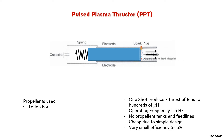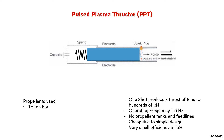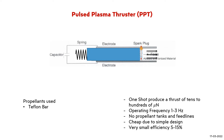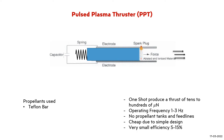A simple spring advances the bar axially for propellant resupply, as shown in the animation. One shot produces a thrust of 10 to 100 micronewtons. The thruster usually operates at a frequency of 1 to 3 Hz. A PPT thruster has several advantages like zero warm-up time, zero standby power, no propellant tanks or feedlines, and notably it is very cheap due to the simple design.